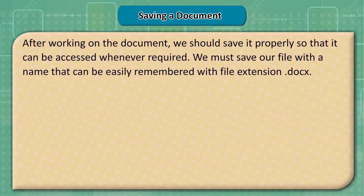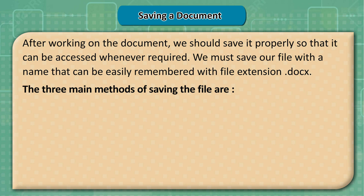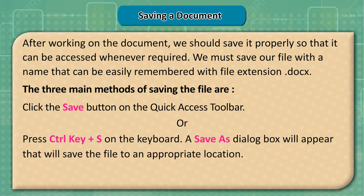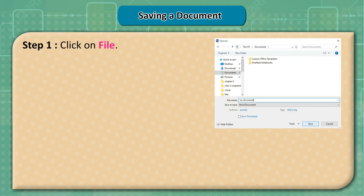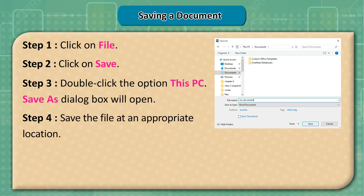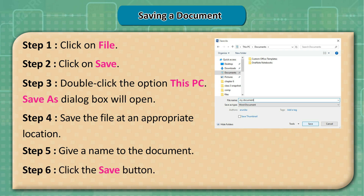Saving a Document: After working on the document, we should save it properly so it can be accessed whenever required. Save the file with a memorable name and the .docx extension. Three methods: click the Save button on the Quick Access Toolbar; or press Ctrl+S; or click File > Save, double-click This PC, then in the Save As dialog box choose a location, give a name to the document, and click Save.